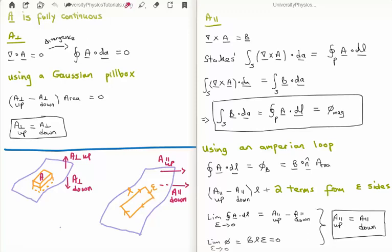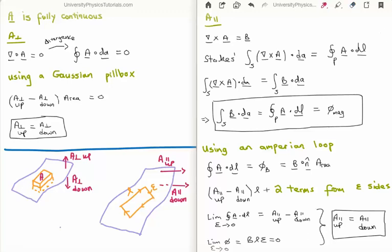Looking at the tangential component, the setup is the same as we used for the magnetic field. We look at the curl of the magnetic vector potential, which of course equals the magnetic field. We invoke Stokes' theorem, which brings us from a closed path integral to a surface integral of the curl of the magnetic vector potential. The surface integral of the curl of A can be written as the surface integral of B dot dA, which is none other than the magnetic flux. Putting this together, the closed path integral of A dot dl is equivalent to calculating the magnetic flux.